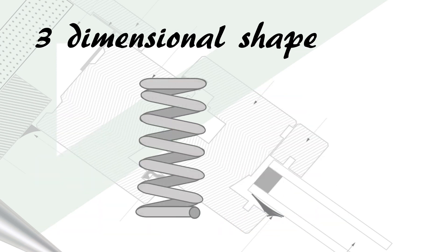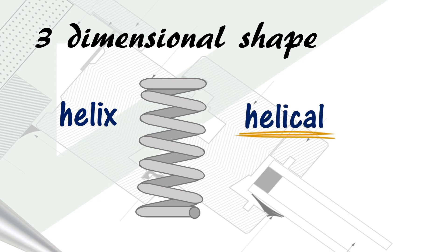Here we have a three-dimensional spiral shape. This is called a helix. If something has this shape, we call it helical. So lots of drill bits are called helical.